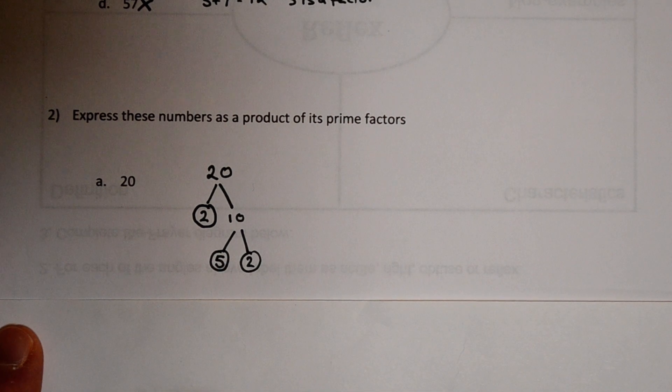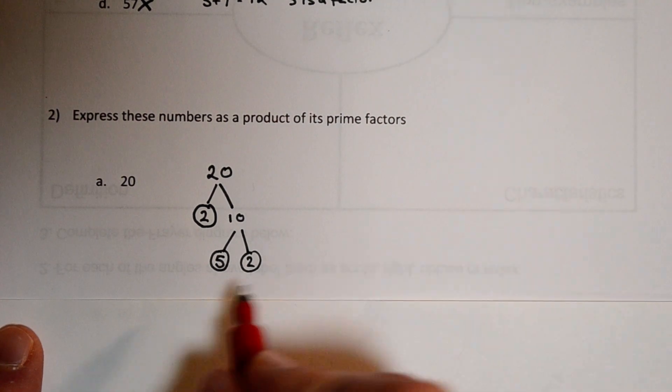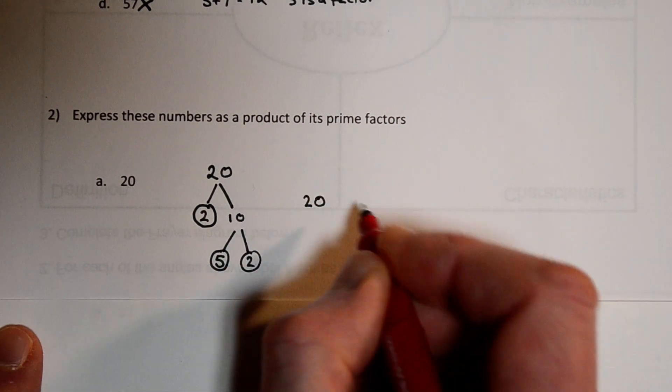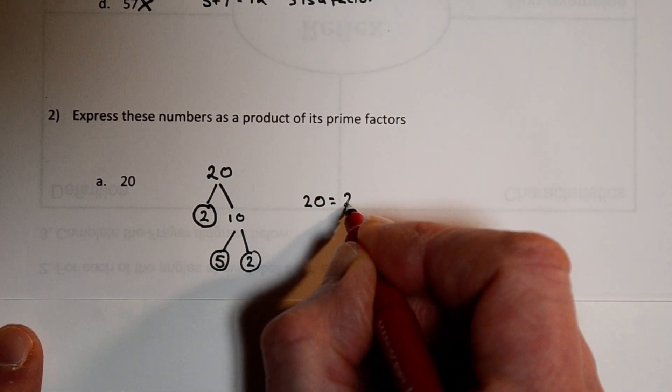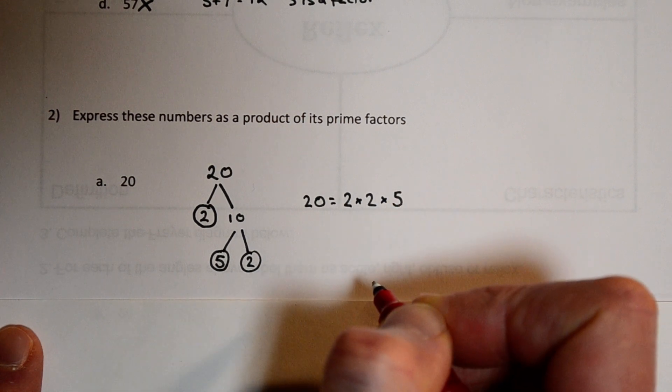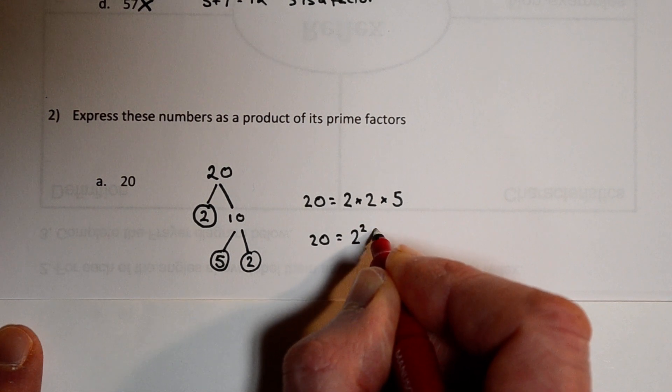2 is a prime and 5 is a prime as well. So we've completed the tree diagram. We can now write down that 20 is a product of those three prime factors. I'm going to put them in order 2, 2 and 5. Or we can write using index notation 2² times 5.